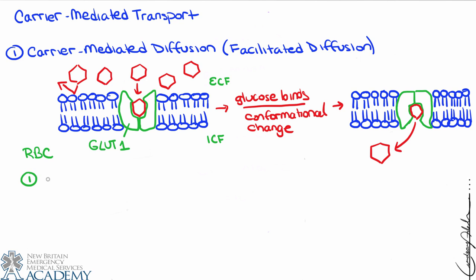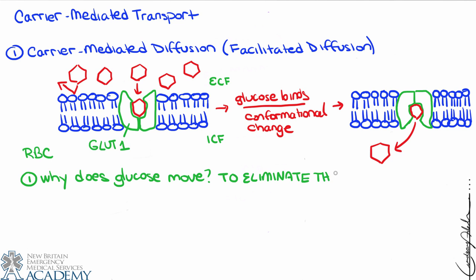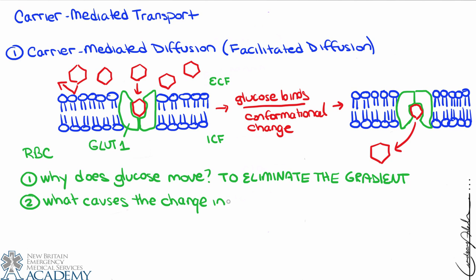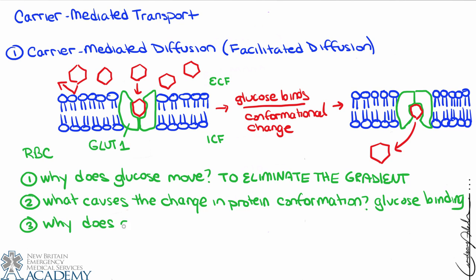Let's revisit our questions. Number one: why does glucose move? To eliminate the gradient — glucose is moving down a concentration gradient from high to low concentration. Number two: what causes the change in protein conformation? Glucose binding. Number three: why does glucose need a carrier protein? Because it's too big for a channel and it doesn't fit through the membrane.